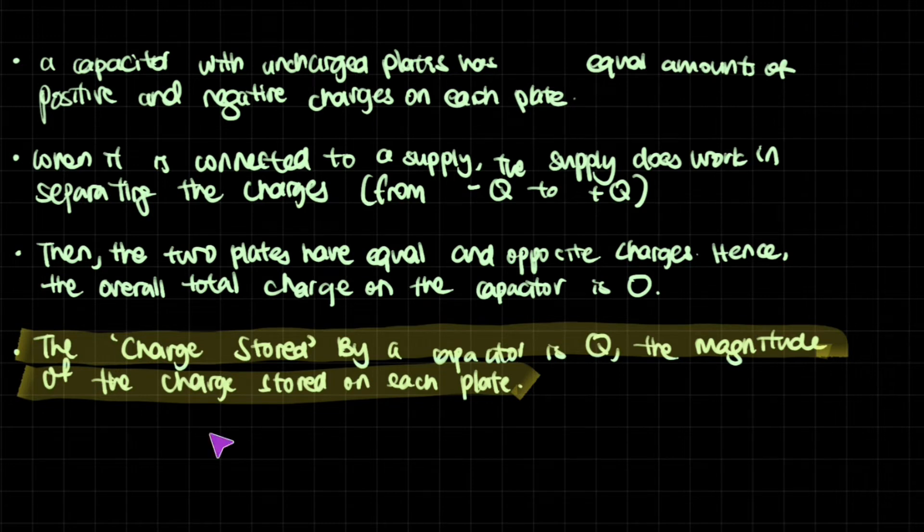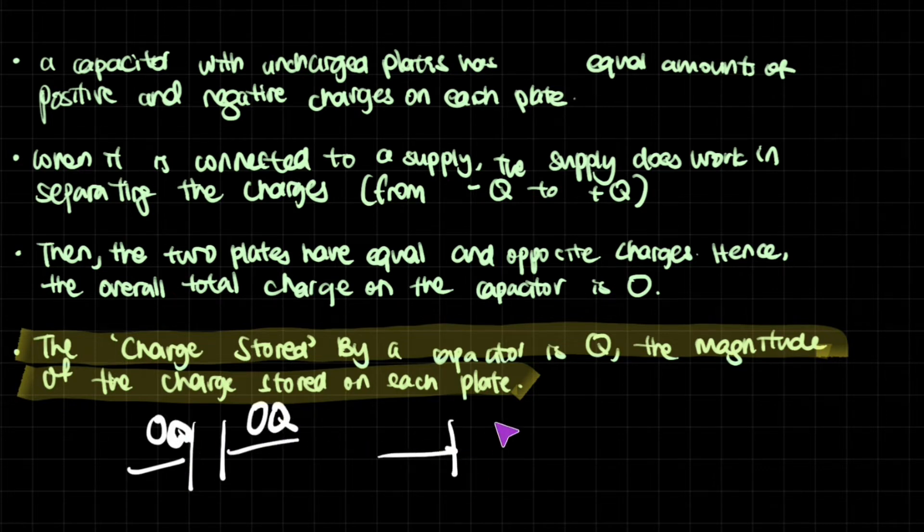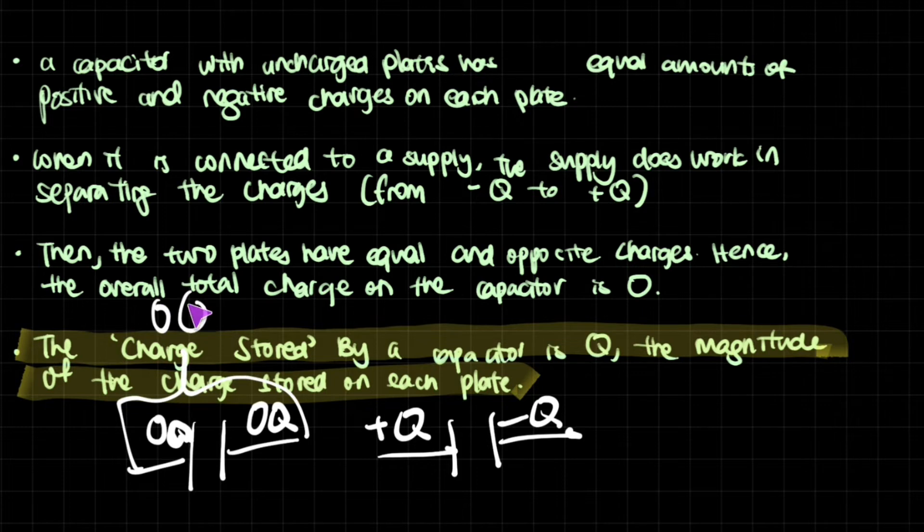Now, the overall total charge on the capacitor is still zero, which is equal to the initial thing. Initially you have zero Q, zero Q, zero Q. And then once it's charged, it has negative Q, positive Q, but the overall is still zero Q. That doesn't change. You add this together, you get zero.